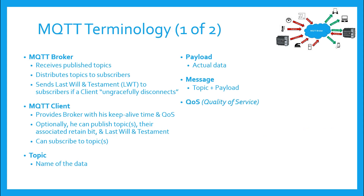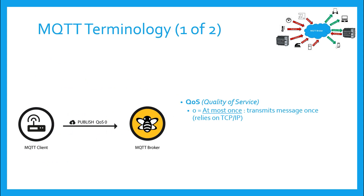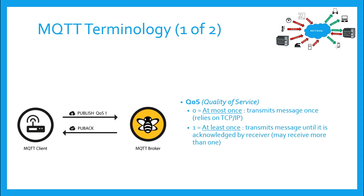There are three values for the quality of service: zero, one, and two. Zero is at most once, meaning that a message is sent once and relies on TCP/IP to get the message to the interested device. One is at least once, meaning that a message will be transmitted until an acknowledgement is received from the receiver, so it could be transmitted multiple times, but guarantees the receiver gets it at least once.